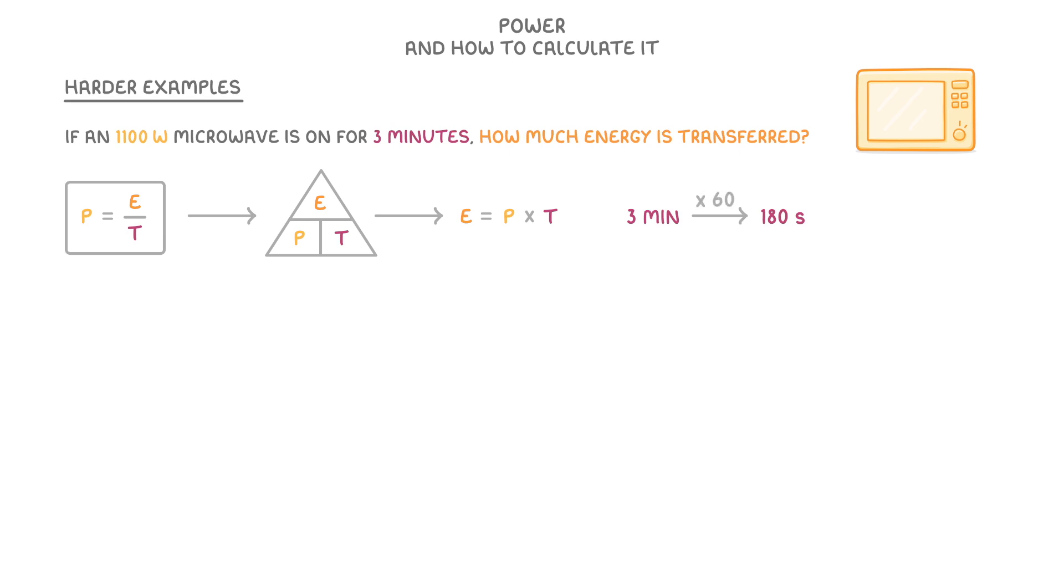And finally, we can substitute our values into the equation and do 1100 times 180 to give us 198,000 joules. And whenever we have a big number like this, we can convert it to kilojoules by dividing it by 1000. So we would have 198 kilojoules as our answer.